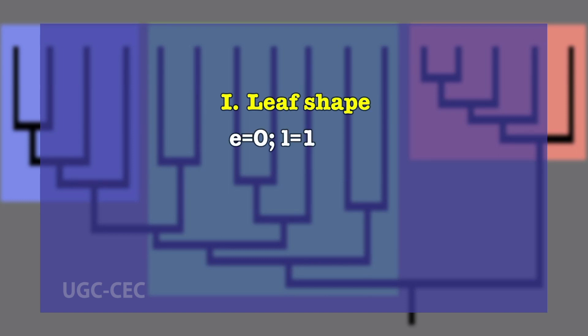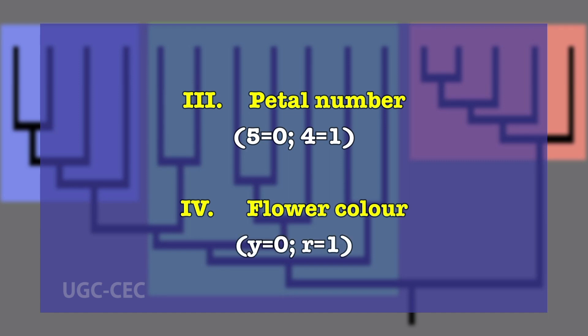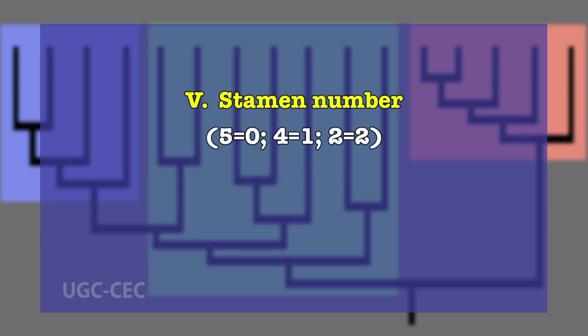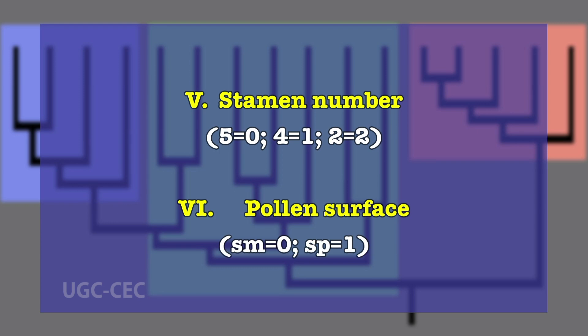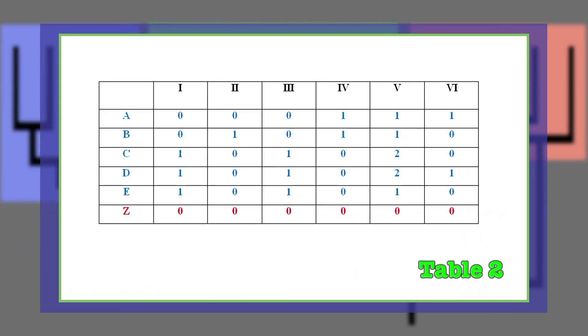The transformation series for the above-listed characters will be constructed after assigning numerical values to the character states: for leaf shape, 0 = elliptical and 1 = lanceolate; for habit, 0 = shrub and 1 = herb; for petal number, 0 = 5 and 1 = 4; for flower color, 0 = yellow and 1 = red; for stamen number, 0 = 5, 1 = 4, and 2 = 2; for pollen surface, 0 = smooth and 1 = spiny. The character-taxon matrix is constructed as illustrated in Table 2.